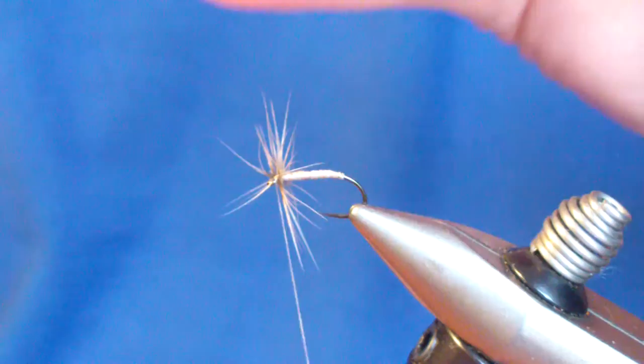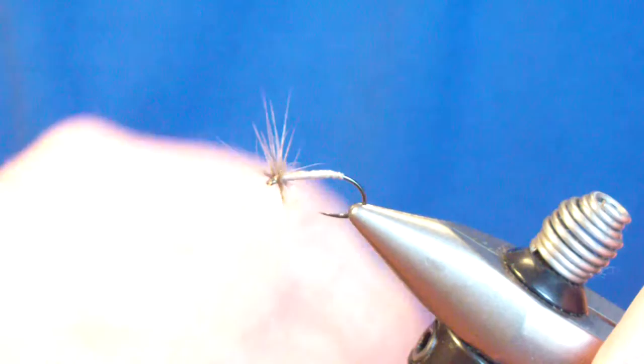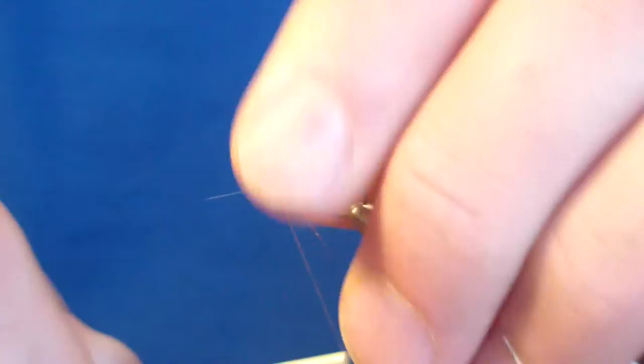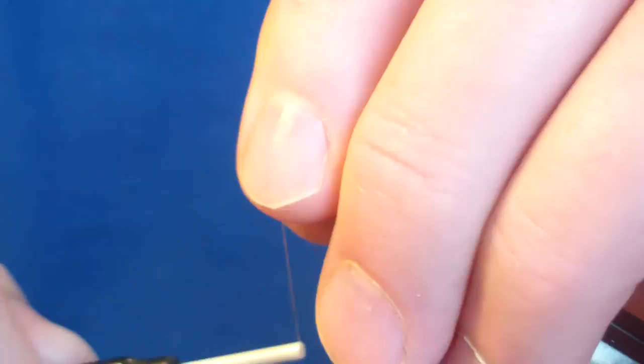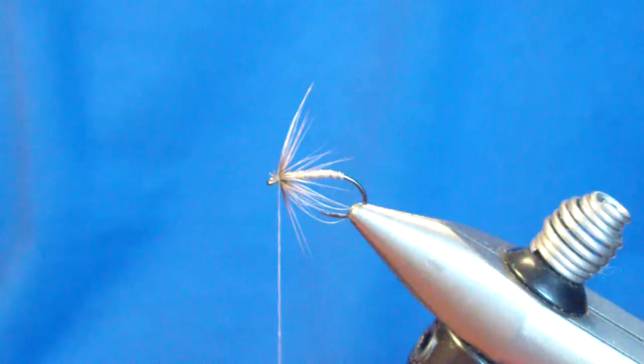And I like to sweep. Since we tied our hackle in wet fly fashion over the front, when we bring it back the curvature of our feather is already facilitating a wet fly feature. I'm going to sweep it back and just further put it in that position, and usually right there is where we want it.